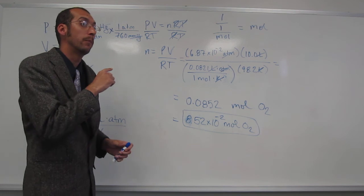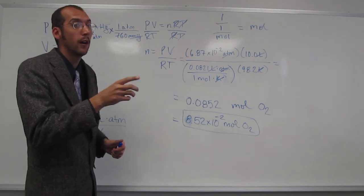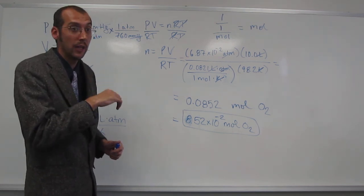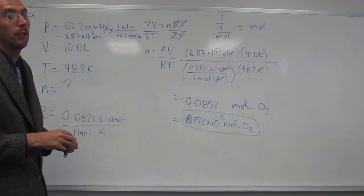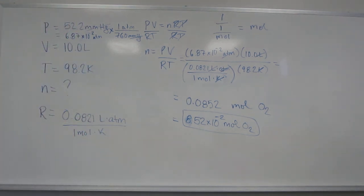So, since it doesn't say anything about things changing, you just do PV equals NRT. Remember, if it changed, it would be P1, V1, equals N1, R, T1, over P2, V2, equals N2, R, over T2. Is that cool? So, do you understand everything? Is there any questions on that one?